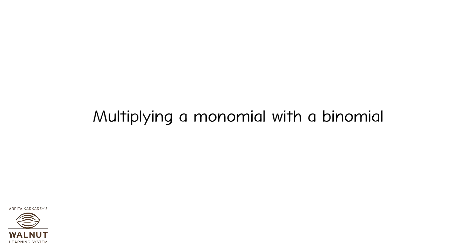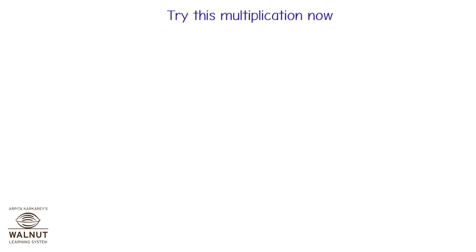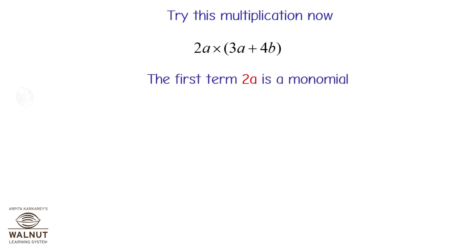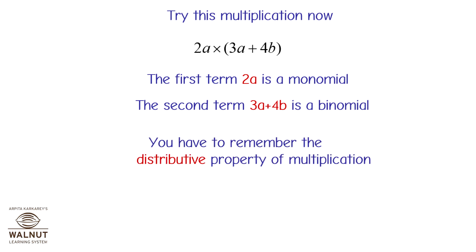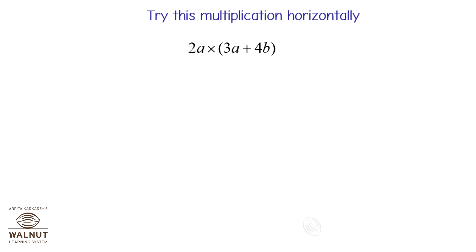Multiplying a monomial with a binomial. Try this multiplication: 2a into (3a plus 4b). The first term 2a is a monomial; the second term 3a plus 4b is a binomial. Using the distributive property — a multiplied by (b plus c) equals a into b plus a into c — we get: 2a into (3a plus 4b) equals 2a into 3a plus 2a into 4b, which is equal to 6a squared plus 8ab.